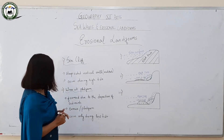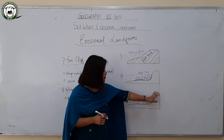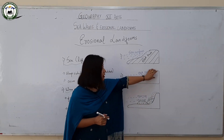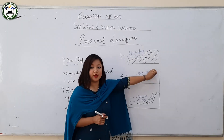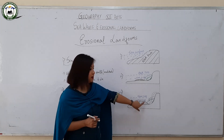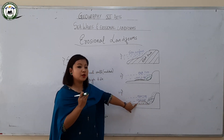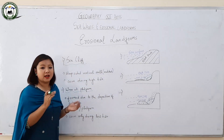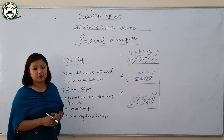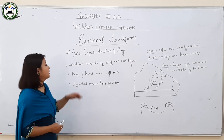Another landform is the wave-cut platform. As the sea cliff forms, materials from the cliff face are transported, weathered, and eroded away and deposited offshore. This offshore deposition of materials forms a terrace or platform-like structure, which is regarded as the wave-cut platform.